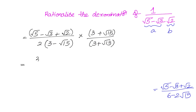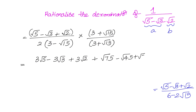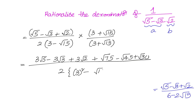Expanding the numerator: 3·√5 − 3·√3 + 3·√2 + √75 − √45 + √30. The denominator uses (a − b)(a + b) = a² − b², giving 3² − (√15)² divided by 2.